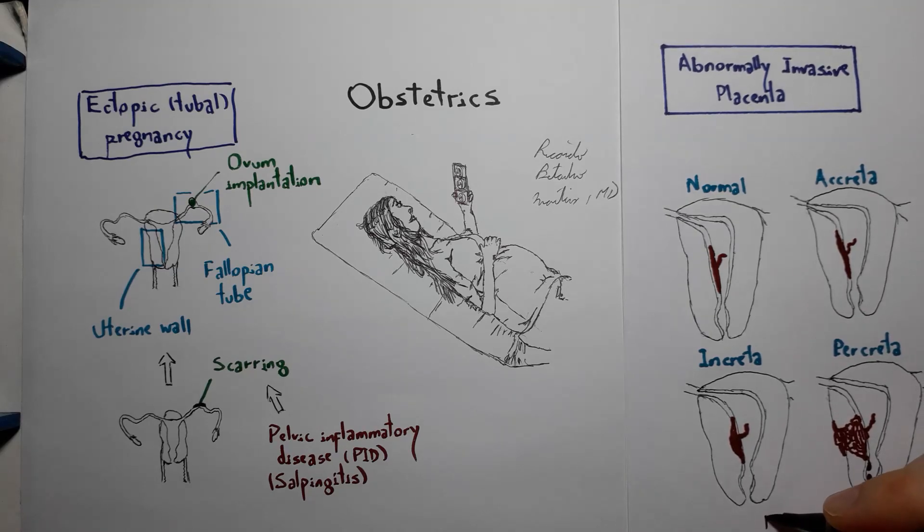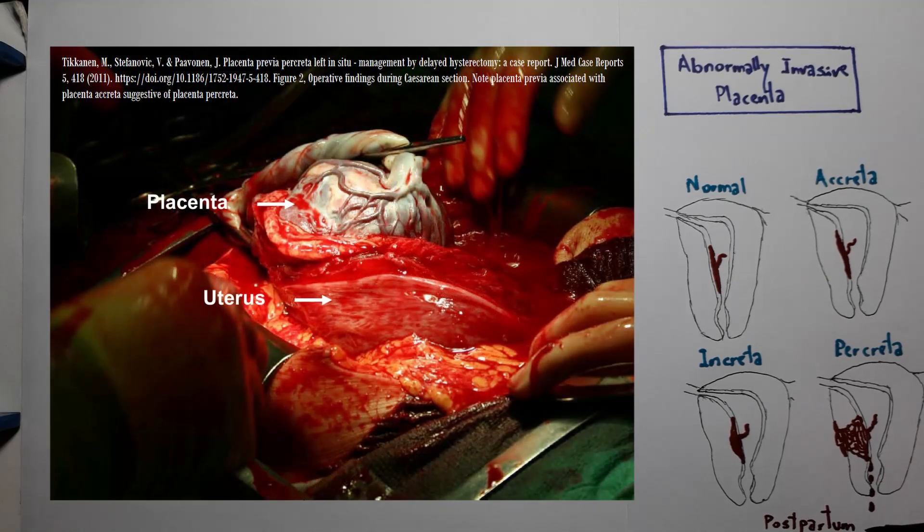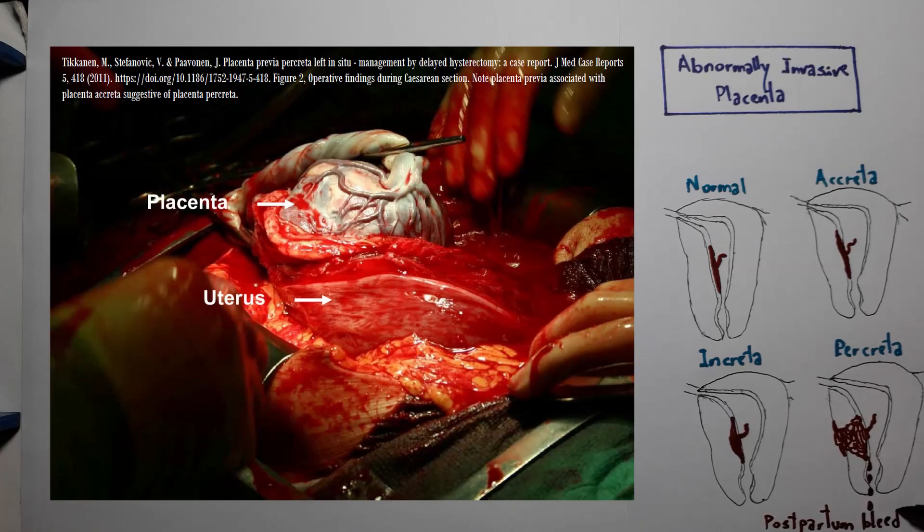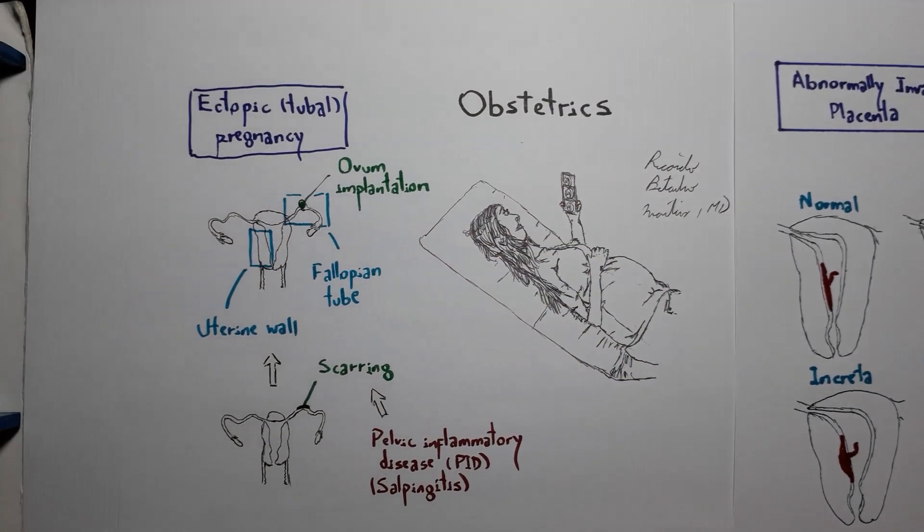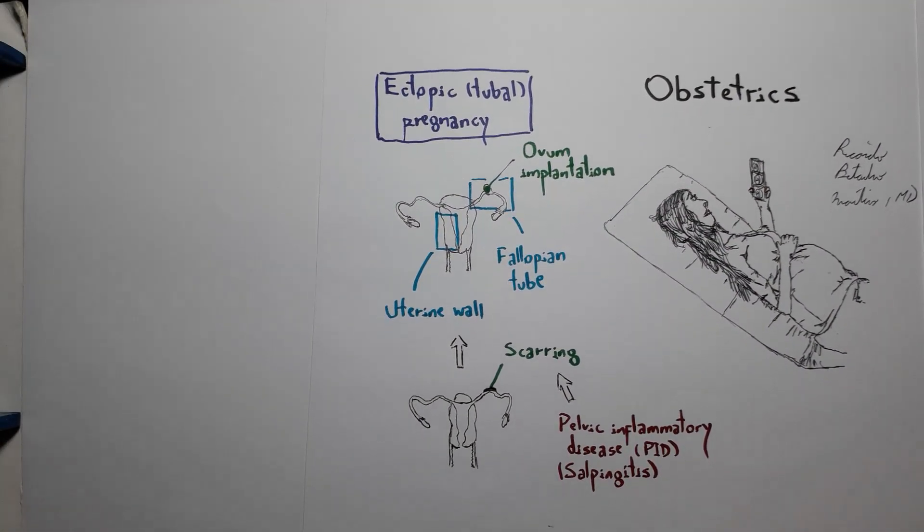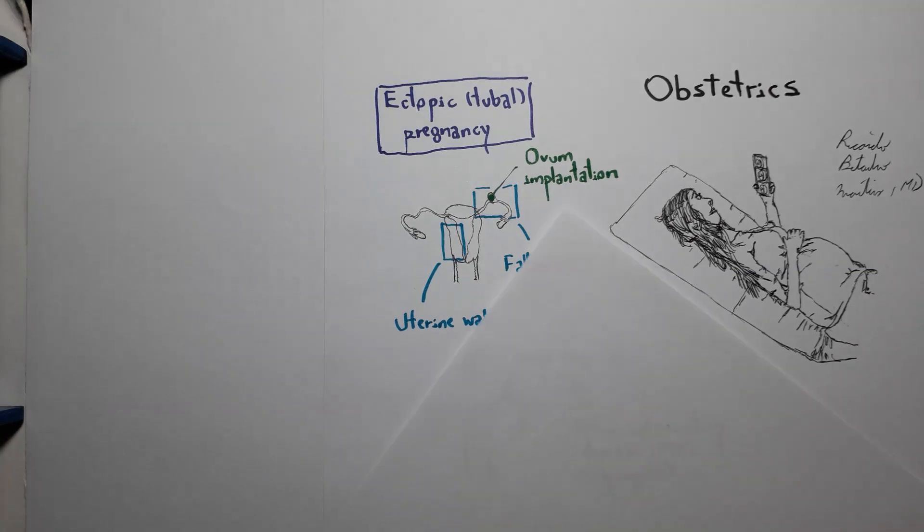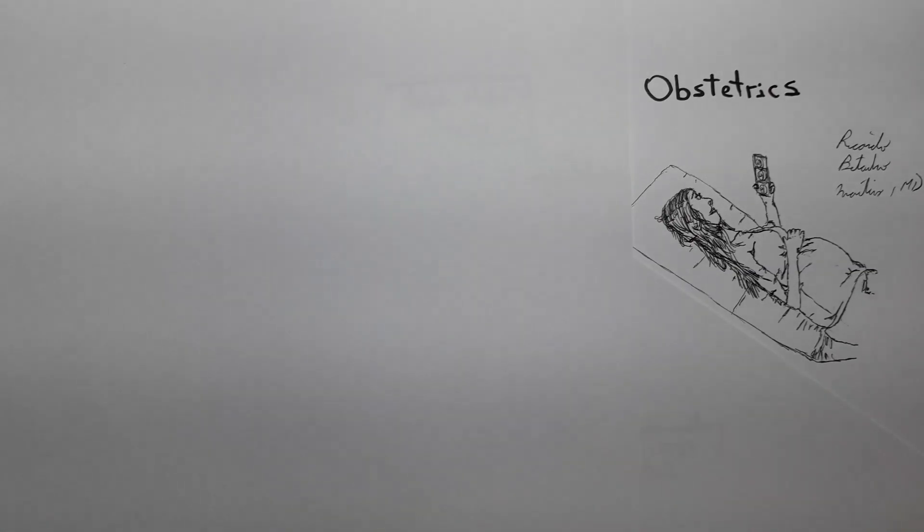Abnormally invasive placenta, therefore, can be a cause of postpartum bleeding, since it often refuses to detach from the uterus after delivery and may need to be removed through curettage or even hysterectomy.